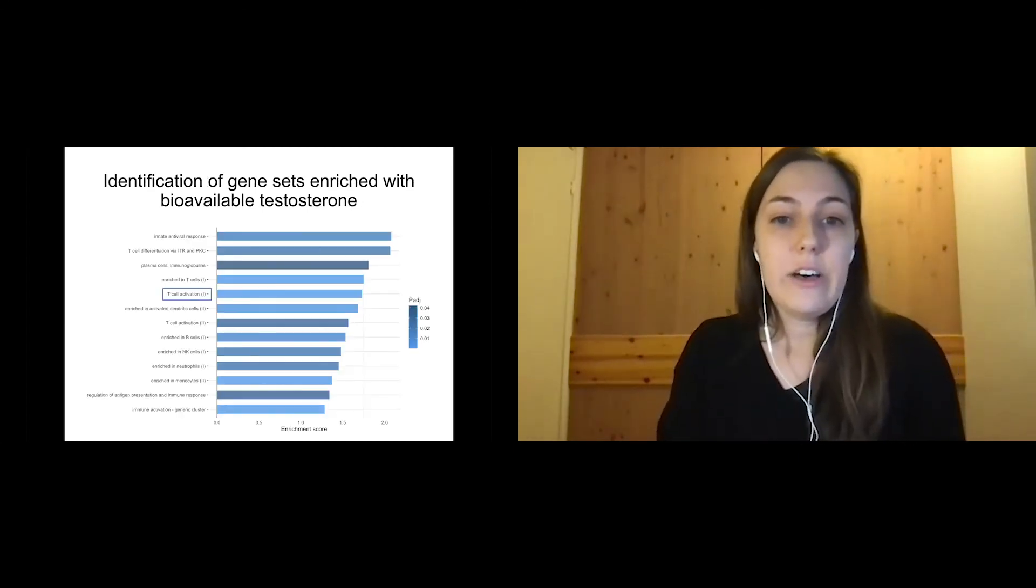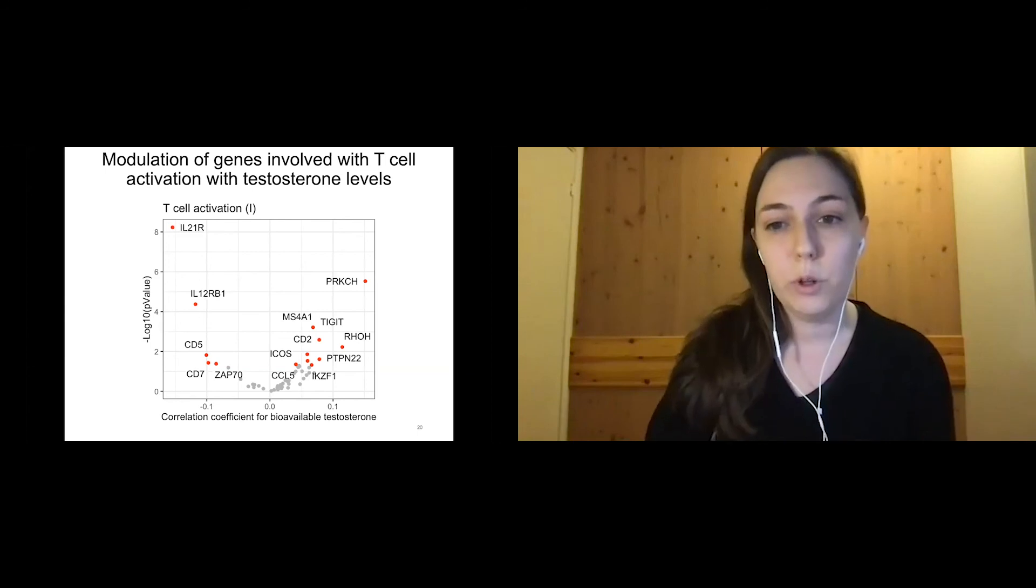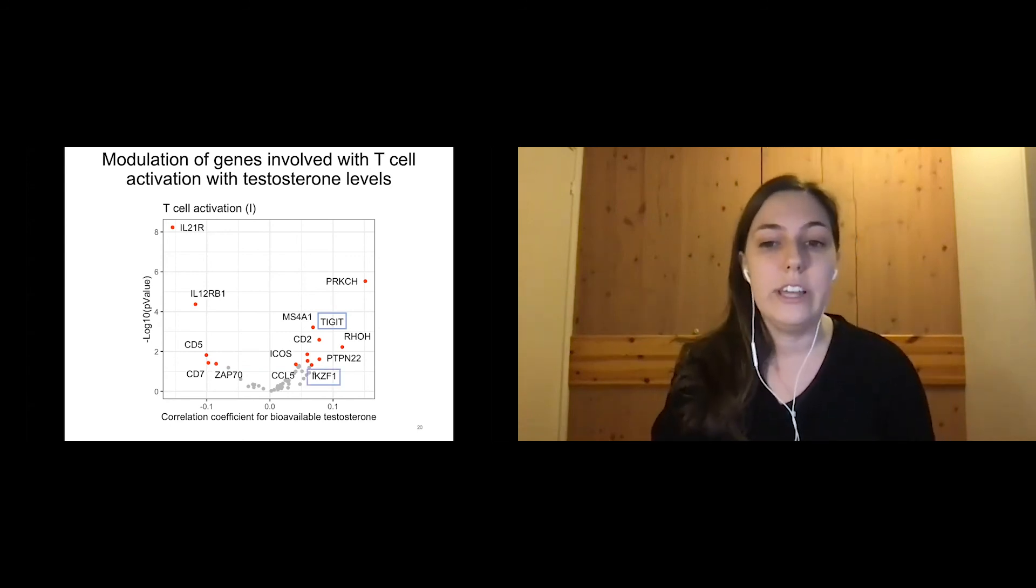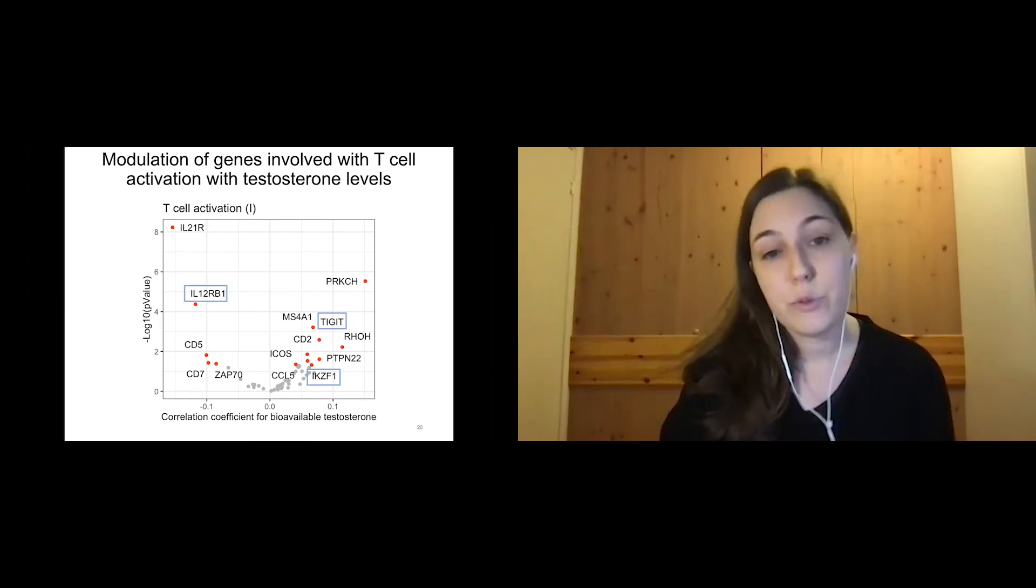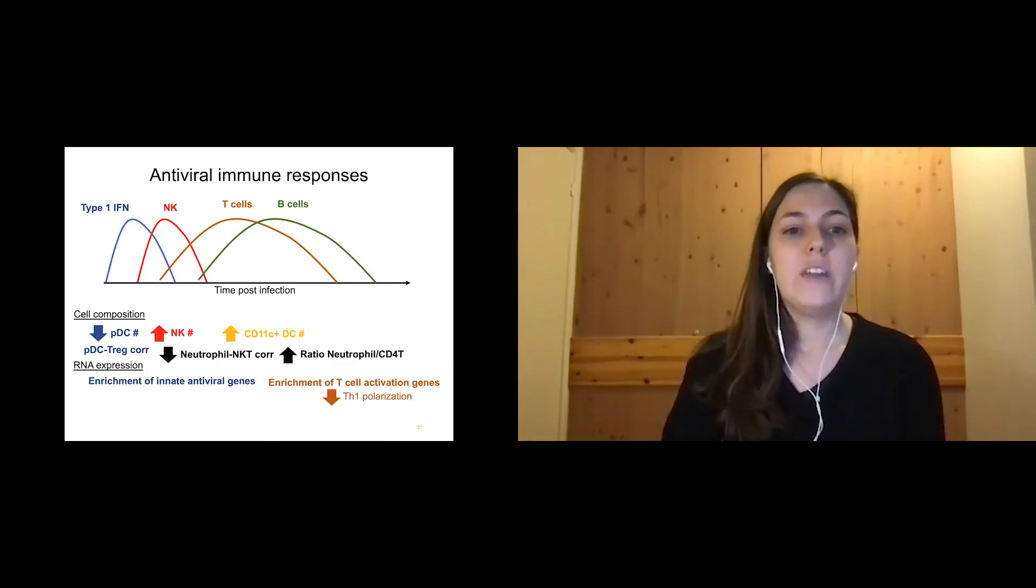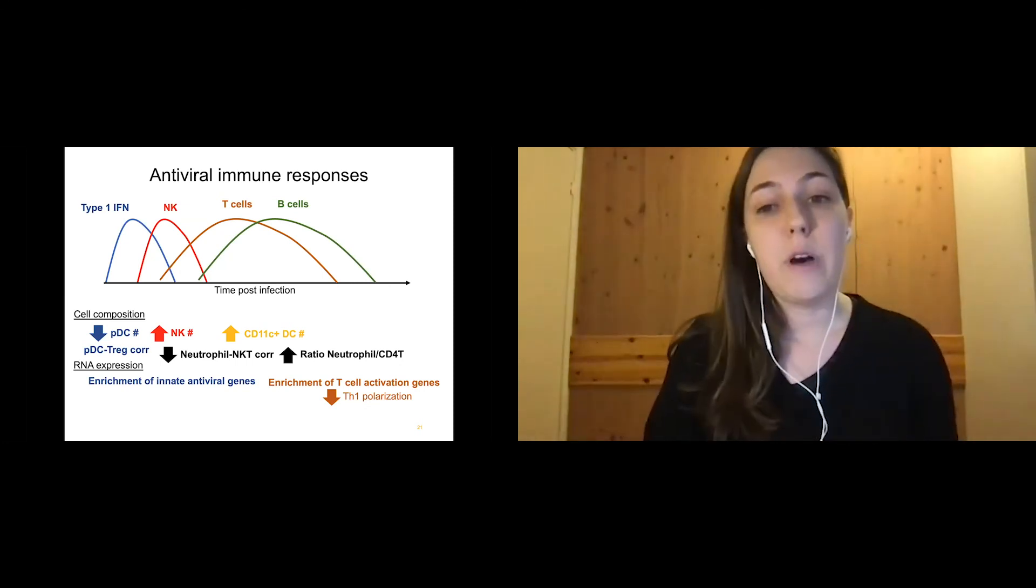When we look at T cell activation, what we think we're seeing here is actually a modulation away from TH1 polarization. If you look at the genes that are going up and going down with bioavailable testosterone, I want to highlight TIGIT, which induces more suppressive responses in T cells. ICOSLG, for example, is a negative regulator of type 1 responses. We also see two important players in type 1 and type 3 responses, IL-12 receptor beta 1 and IL-21 receptor going down with testosterone levels. Again, we're coming back to these changes that are happening in terms of cell composition, relationships, and now functionally speaking, in RNA expression that is being modulated by testosterone.